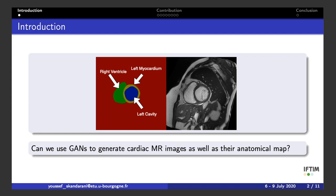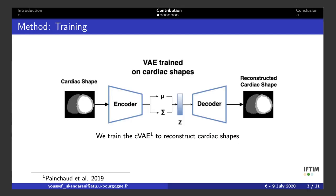Our method is split into two stages. First, we train a variational autoencoder to reconstruct segmentation maps of cine MRIs, and in doing so we also learn a latent space of anatomically viable cardiac shapes, since the dataset used for training the variational autoencoder was delineated by an expert.